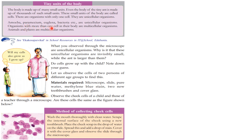Amoeba, paramecium, euglena, bacteria etc. are unicellular organisms. Organisms with more than one cell in the body are multicellular organisms. Animals and plants are multicellular organisms.